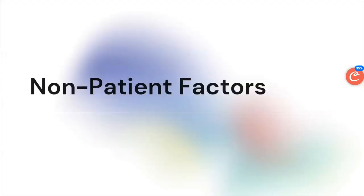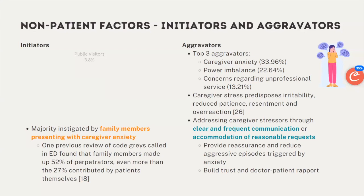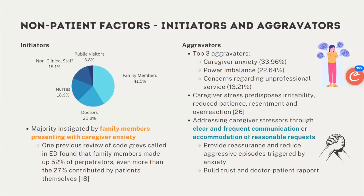For non-patient factors, the majority of initiators were family members, followed by doctors, nurses, non-clinical staff, and public visitors. Most code grays involving non-patients were instigated by family members presenting with caregiver anxiety. The top three aggravators were caregiver anxiety, power imbalance, and concerns about unprofessional service. Caregiver stress predisposes to irritability, reduced patience, and overreaction. One way to improve this would be through clearer communication and accommodation of reasonable requests where possible.